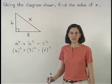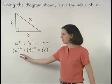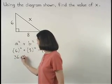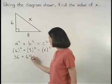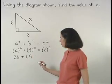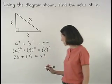Solving from here, 6 squared is 6 times 6 or 36, and 8 squared is 8 times 8 or 64. So we have 36 plus 64 equals x squared.